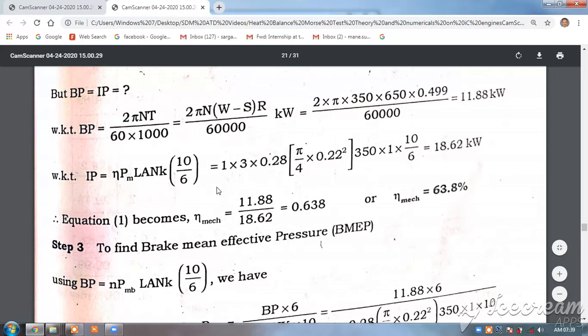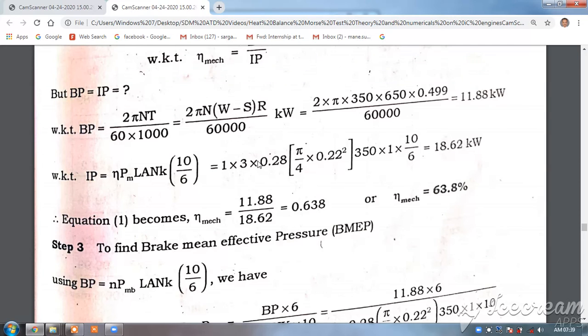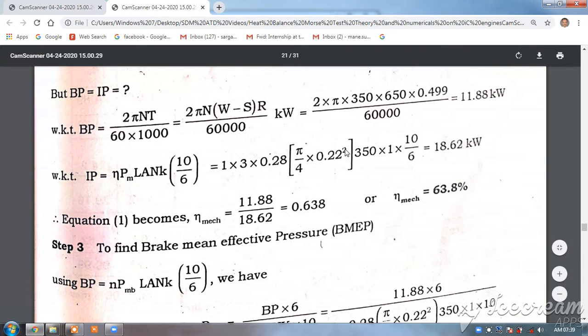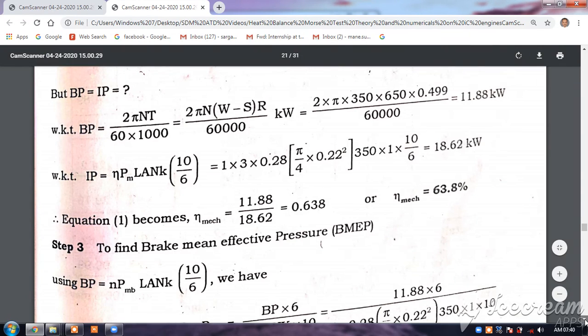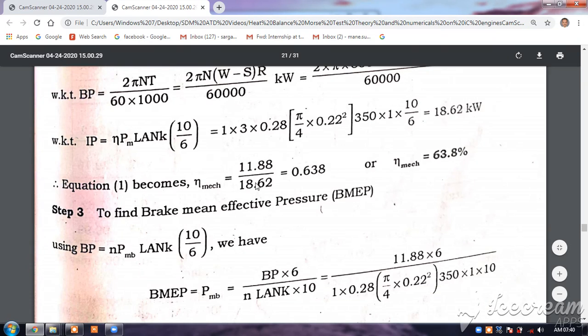Now indicated power IP = nCₘLANk/60. Number of cylinders is 1, mean effective pressure is 3 bar, L is 0.28, A = π/4 × d², N = 350 rpm, k = 1 because it's a two-stroke engine. That gives a result of 18.62 kW. This is the indicated power. So mechanical efficiency equals BP/IP, substituting values of BP and IP we get η_mech = 11.88/18.62 = 0.638 or 63.8%.